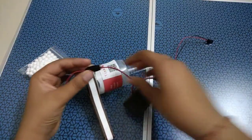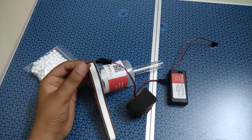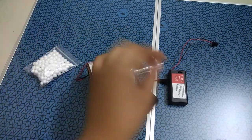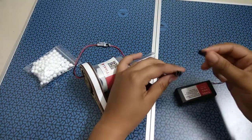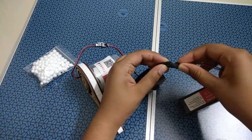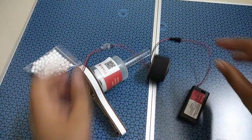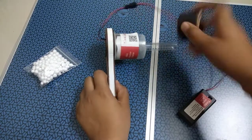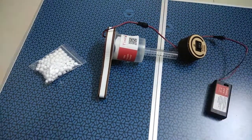Something like this. And after that connect rocker switch to battery holder. So something like this.